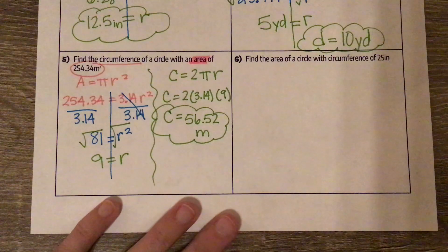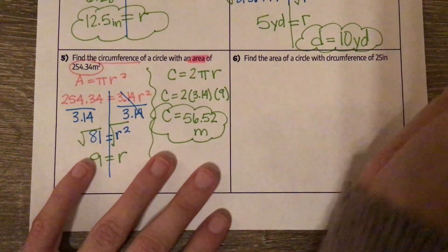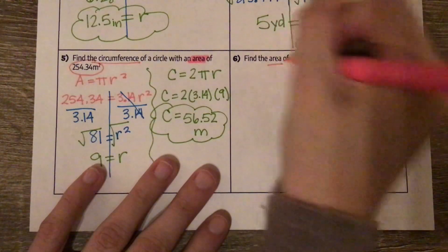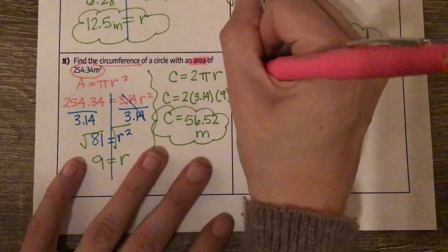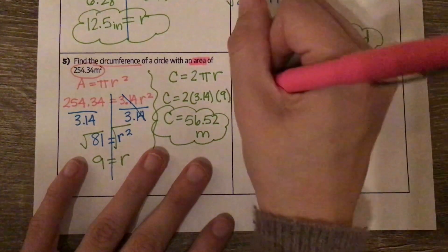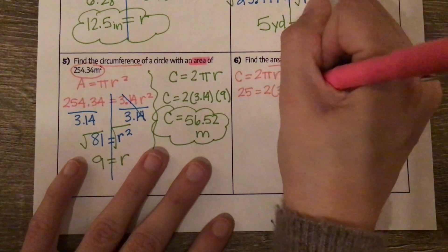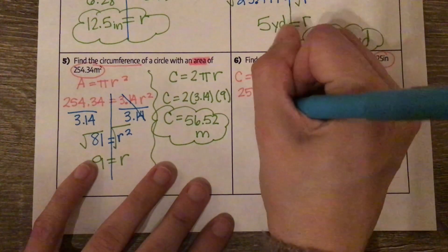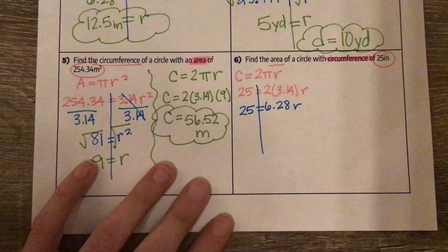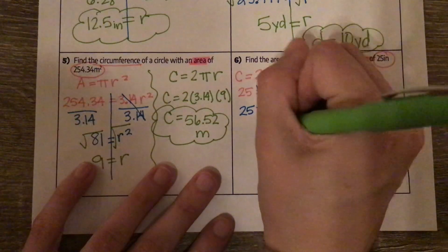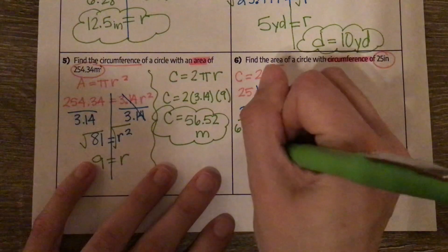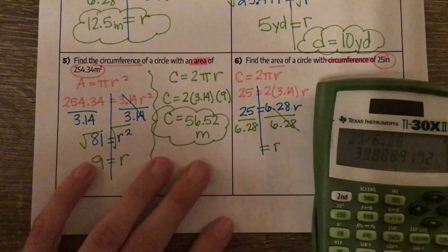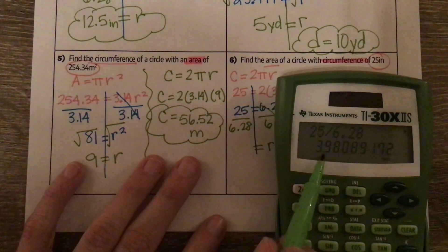Last one, number six: find the area of a circle with a circumference of 25 centimeters. The circumference is what we are given, and we are finding the area. For area we need the radius, so the circumference formula I'm going to use is the one with radius: C equals 2πr. So 25 equals 2 times 3.14 times r. When solving, first I'll simplify: 2 times 3.14 is 6.28 times our radius equals 25. R is being multiplied by 6.28, so I divide by 6.28. We get r equals 25 divided by 6.28, which is 3.98.